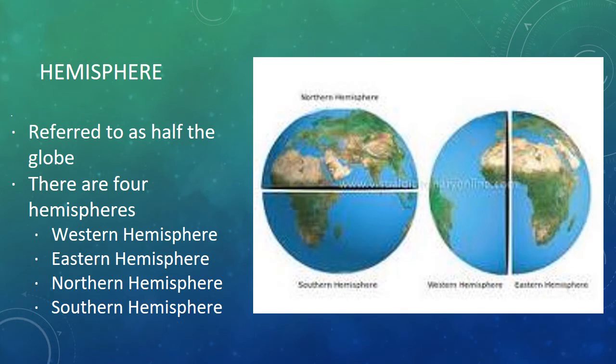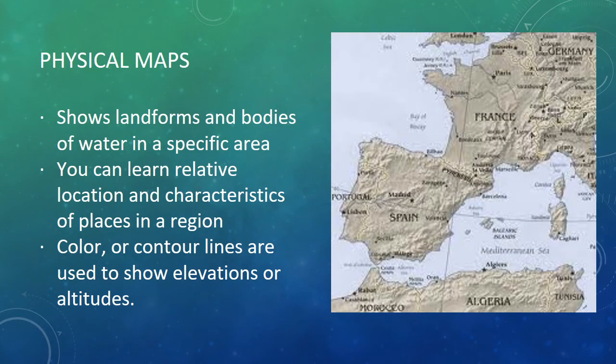A hemisphere refers to half of the globe. There is the eastern hemisphere, the northern hemisphere, and the southern hemisphere. Physical maps show landforms and bodies of water in a specific area. You can learn relative location and characteristics of places in a region. Color or contour lines are used to show elevations or altitudes.